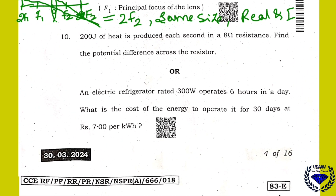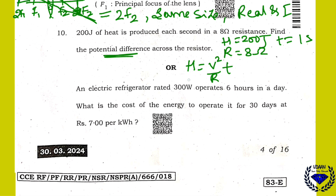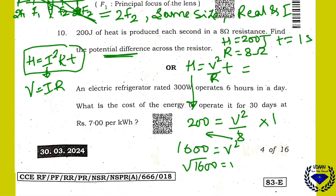Very important problem: 200 joules of heat is produced each second, and the resistance is 8 ohm. What is the potential difference? Using the formula H = V²/R × t: V² = H × R / t = 200 × 8 / 1 = 1600. So V = √1600 = 40 volt. The potential difference is 40 volt.